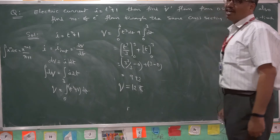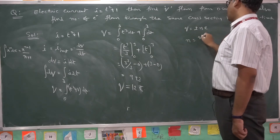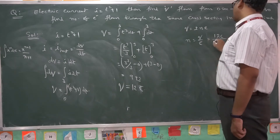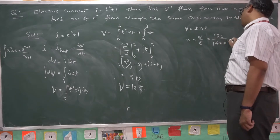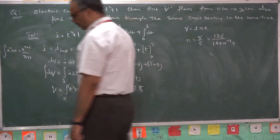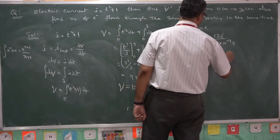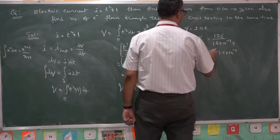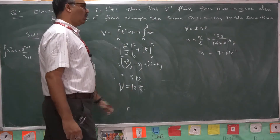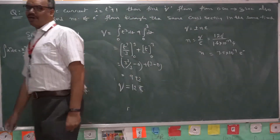Next, you are asked to find the number of electrons flown. Using the formula Q = Ne, so N = Q/e. The charge flown is 12 Coulombs and each electron possesses charge 1.6 × 10⁻¹⁹ Coulombs. So N = 12 / (1.6 × 10⁻¹⁹) = 7.5 × 10¹⁹ electrons. This many electrons need to be transferred to get 12 Coulombs of charge.